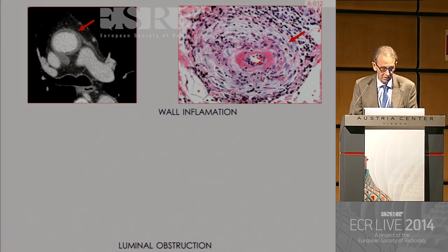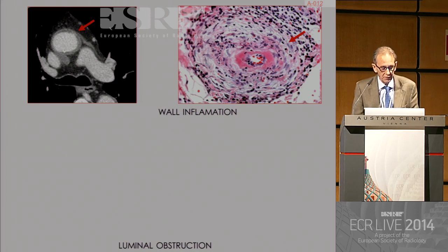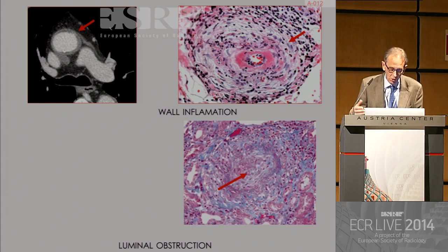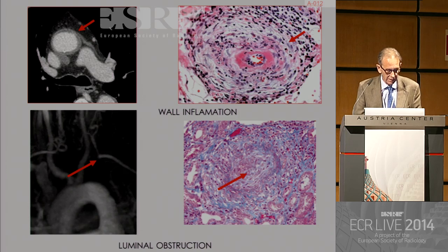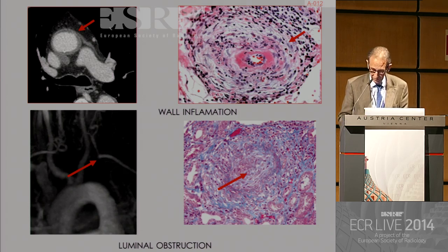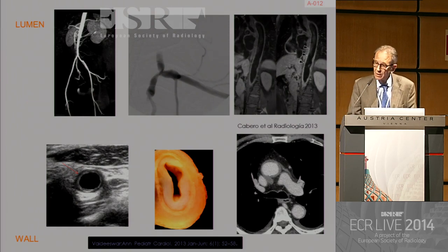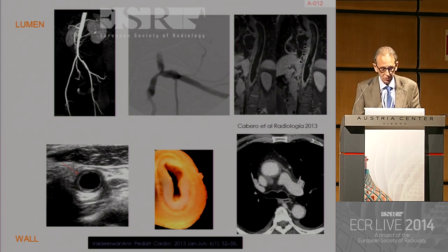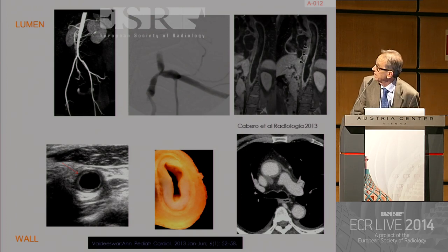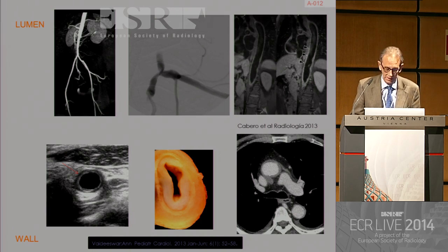In vasculitis, there is inflammation of the vessel wall, and the translation of that inflammation with thickening is seen in the images. Later on, some of the vessels will be completely occluded, as seen in this pathological photograph, and we will see the translation in imaging as an occluded vessel. In MRI, we can show how the wall can be not only thickened, but may have contrast uptake.